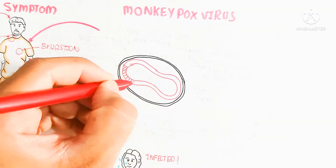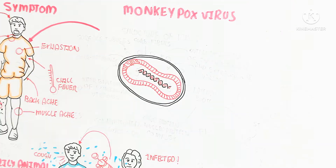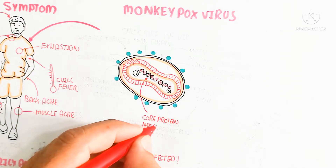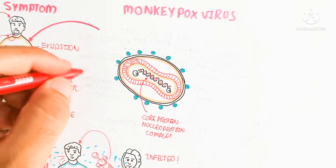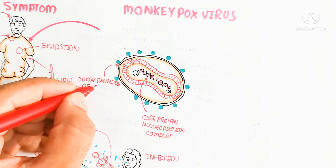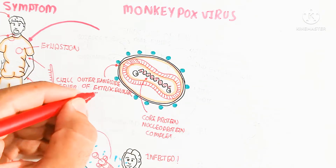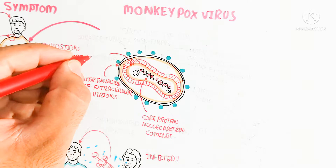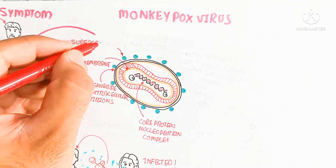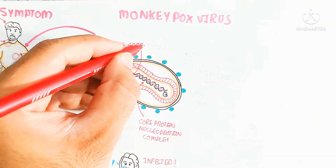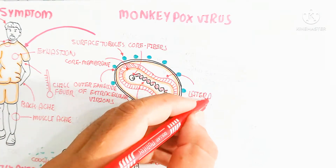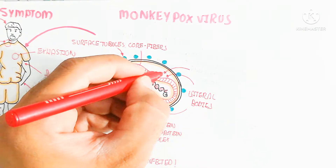The monkeypox virus has a brick or oval shape structure. On the inner side is the core protein nucleoprotein complex containing a DNA double helical structure, as well as core fibers. It also contains enzymes for replication within the host cell machinery. The surface tubules are visible as the green-colored structures shown in the figure.